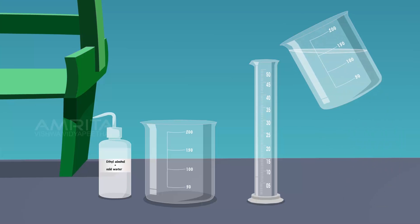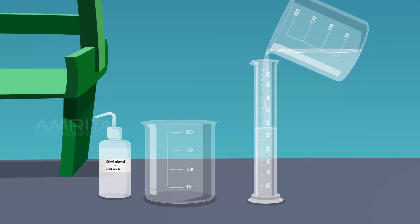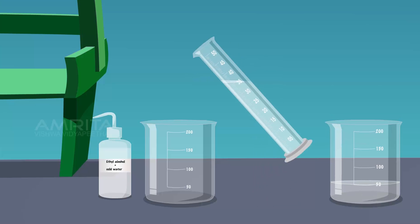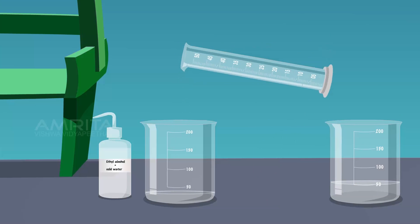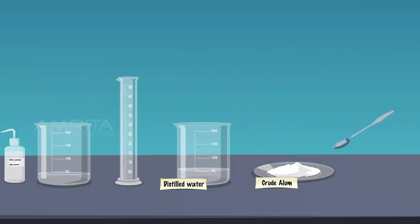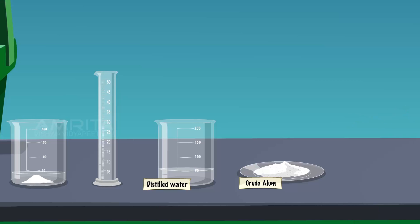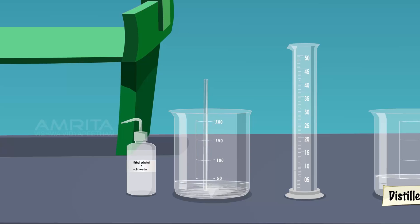Take 30 ml of distilled water in the measuring cylinder and pour it into the clean beaker. Take a small quantity of powdered crude sample of potash alum using the spatula. Add the crude sample of alum into the beaker containing distilled water. Stir the contents of the beaker well using the glass rod to dissolve it.